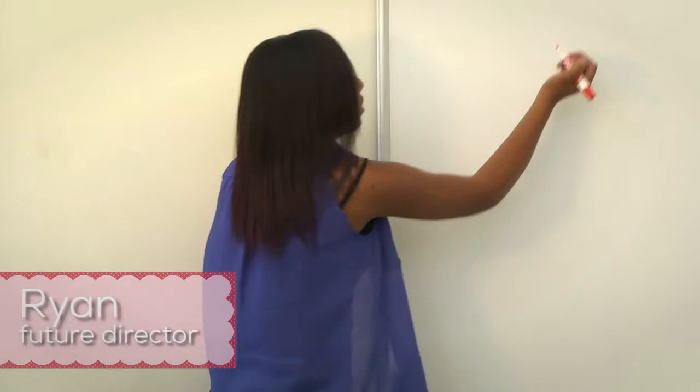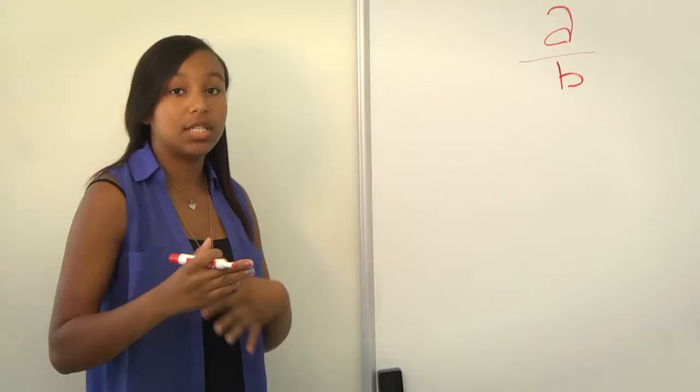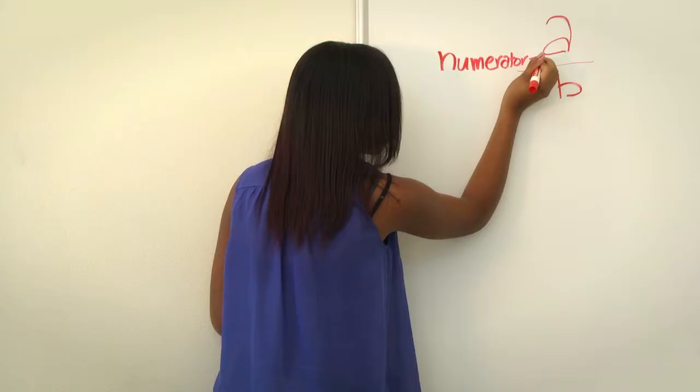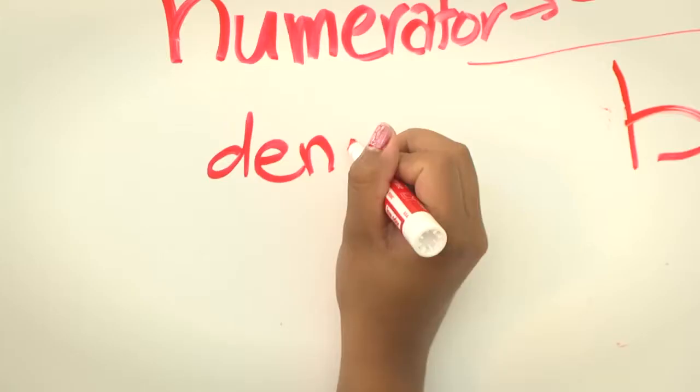In this lesson, we'll be learning about fractions. Fractions are expressed as a number over or divided by another number. A fraction consists of a number on top, which is being divided, called a numerator, and a number on bottom, called the denominator.